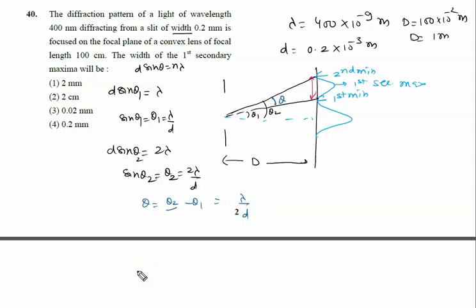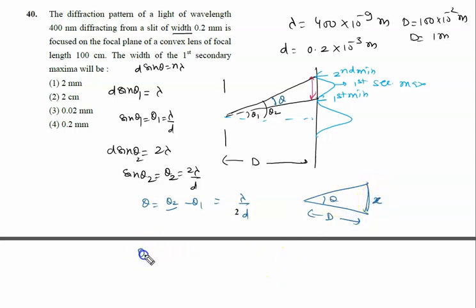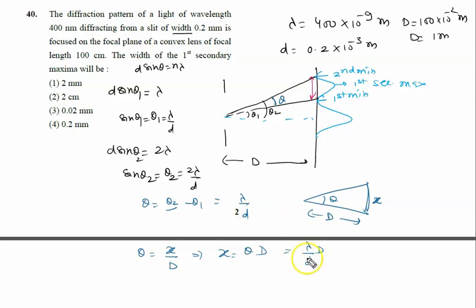Now, if this angular width is θ and the screen distance is capital D, we need to find the arc length x. Using the relation θ = arc/radius, we get x = θ × D. Substituting θ = λ/d, we get x = (λ/d) × D. The value of λ is 400×10⁻⁹ m, capital D is 1 meter, and small d is 0.2×10⁻³ meters.